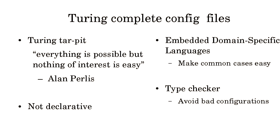Let's think for a minute about Turing complete config files. It's generally thought not to be a good idea — there's the Turing tar pit concept where everything is possible but nothing of interest is easy. SendMail CF taught us we don't want Turing complete config files. If you can write the Towers of Hanoi in your config file, you're doing something wrong. They're also not declarative. However, with a Turing complete language you get embedded domain-specific languages and a type checker if you're using Haskell or Rust.